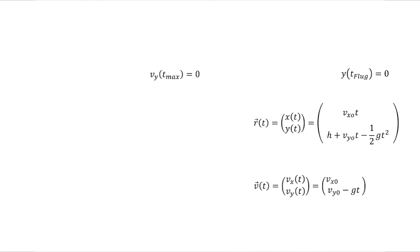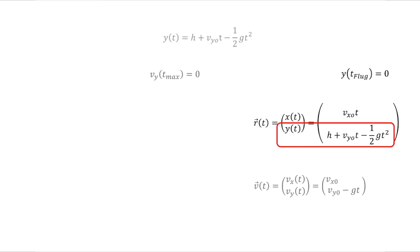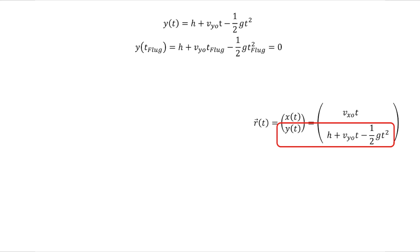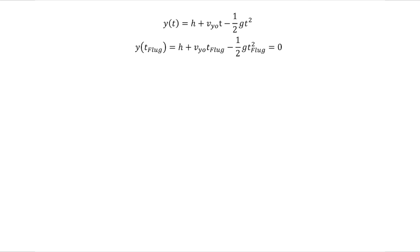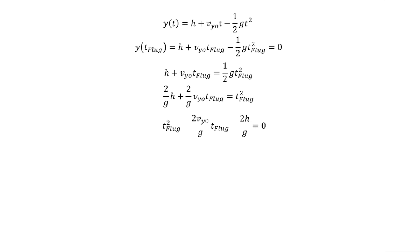Zurück zu unseren Bewegungsgleichungen. y(t_flug) = 0 interessiert uns, das heißt, wir benutzen die Bewegungsgleichung für die y-Komponente. Wir setzen t_flug ein und bekommen: h + Vy0·t_flug − ½·g·t_flug² = 0, weil der Pfeil auf dem Boden aufschlägt. Diese Gleichung formen wir um: wir addieren ½·g·t_flug² auf beide Seiten, dividieren durch g und multiplizieren mit 2. Dann holen wir alles auf eine Seite und erhalten: t_flug² − (2·Vy0/g)·t_flug − (2h/g) = 0.